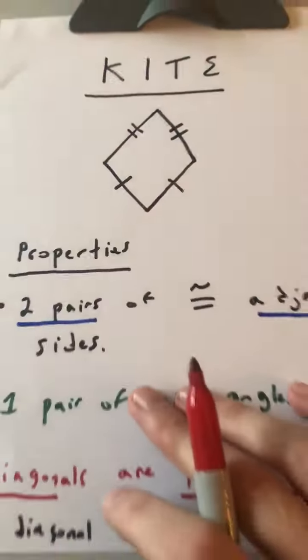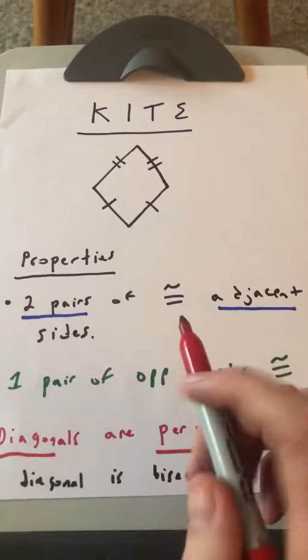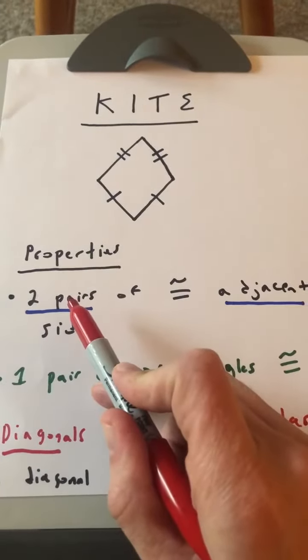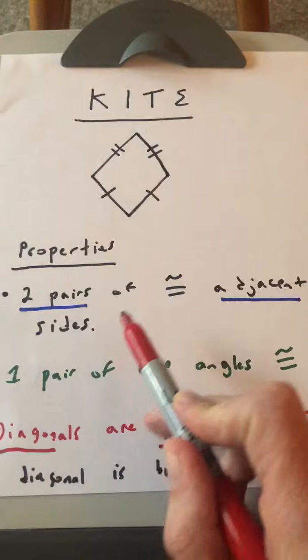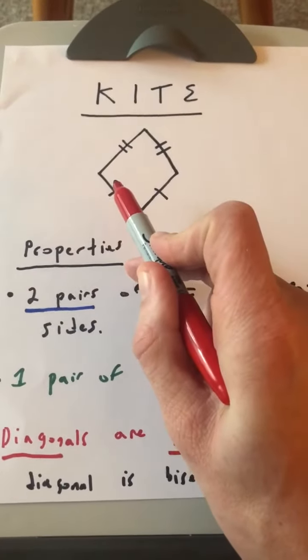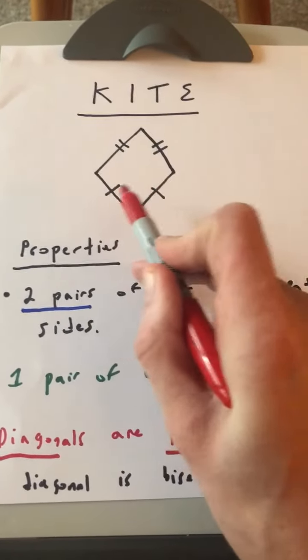The definition of a kite, and actually the first property that I have listed here, is that there's two pairs of congruent adjacent sides. That means that it has two pairs of sides that are next to each other that are congruent.